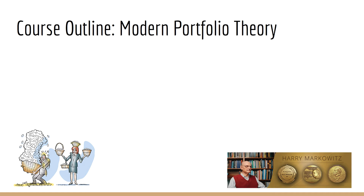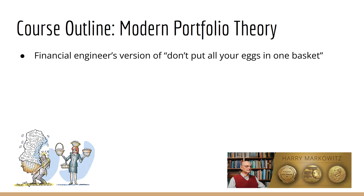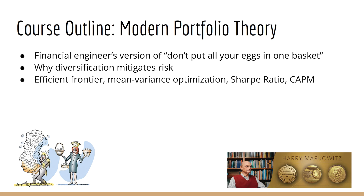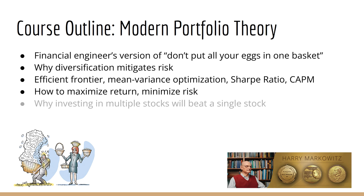The next section is going to be about modern portfolio theory. This section is the financial engineer's version of 'don't put all your eggs in one basket.' We'll learn about why diversification is good and how it weakens our greatest enemy, which is risk. You'll learn about core topics in financial engineering, such as the efficient frontier, mean-variance optimization, the Sharpe ratio, and the capital asset pricing model. Given a universe of stocks — any set of stocks you want to consider buying — we will learn how to maximize return while at the same time minimizing risk. We will learn how investing in multiple stocks will always be better than investing in just a single stock. We can get higher returns and lower risk.